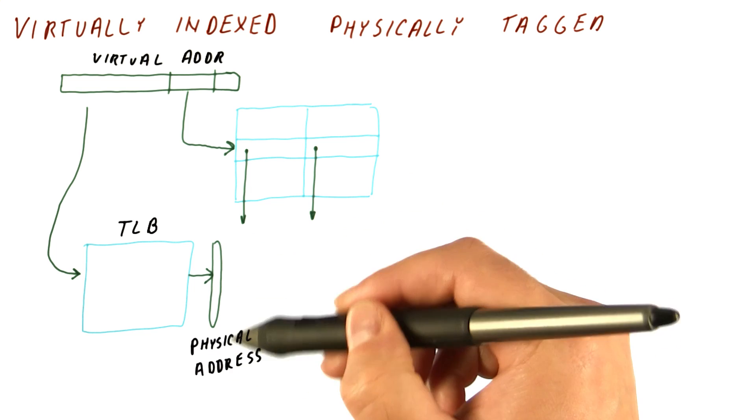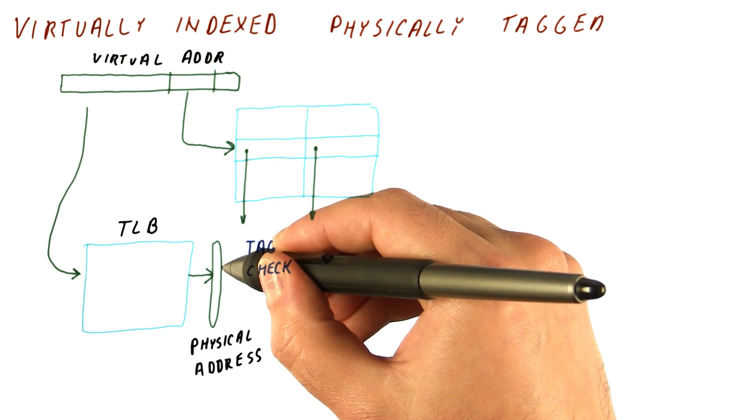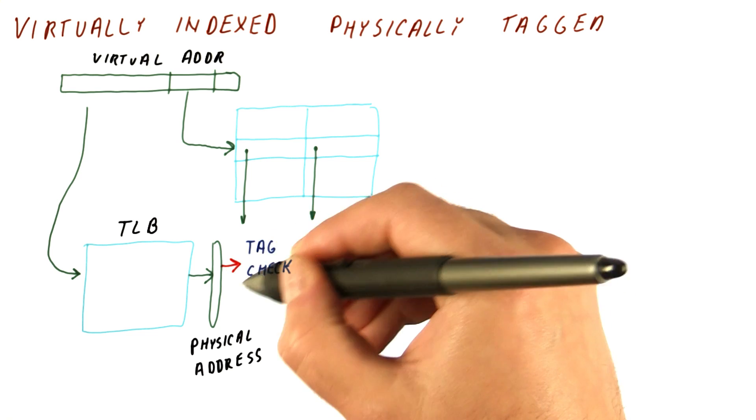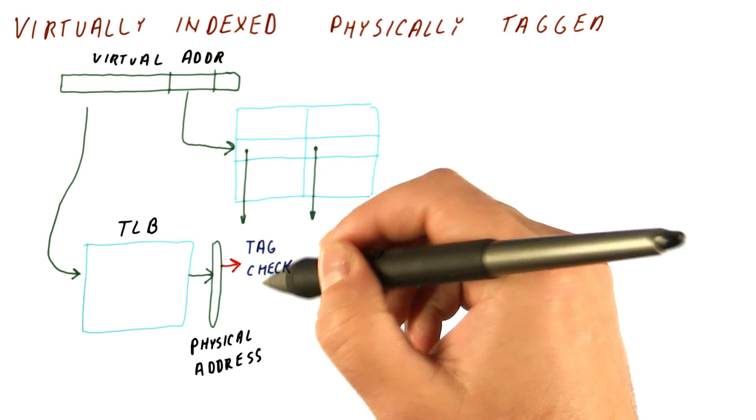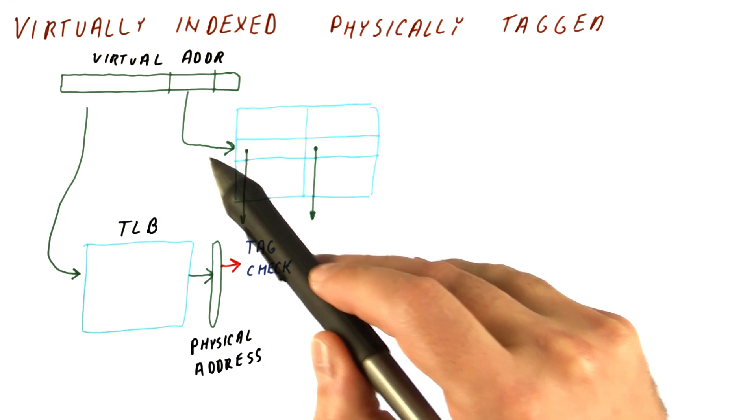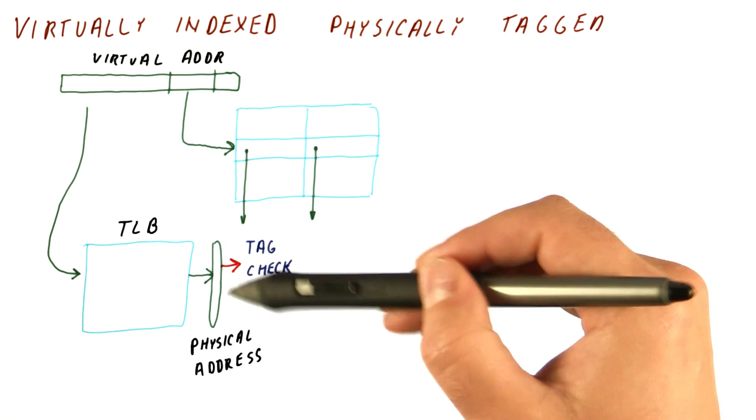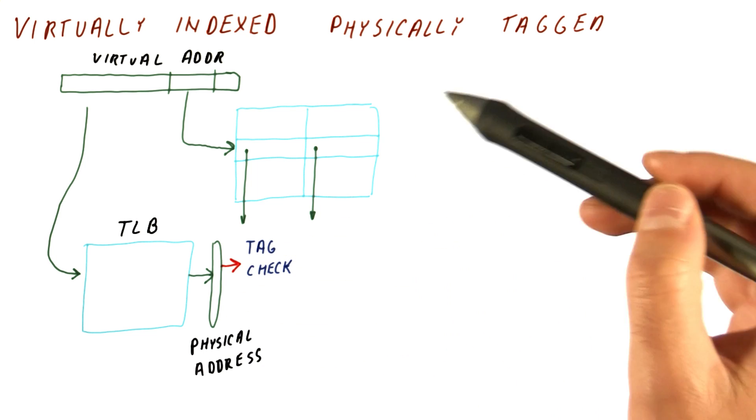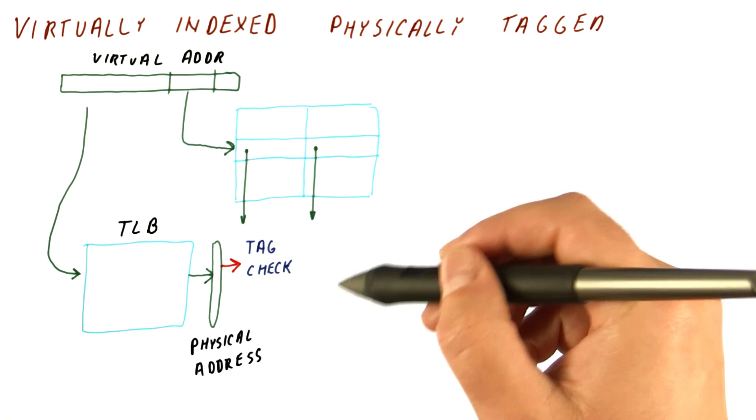So now that we got the physical address, we perform the tag check using the physical address, not the virtual one. This is why this is called virtually indexed. The index bits come from the virtual address. The tag bits come from the physical address cache. And from here it proceeds normally.